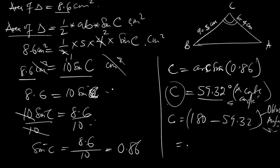This is the real value of C, not this one. This one is an acute angle. What we're looking for is the obtuse angle. So 180 minus 59.32 equals 120.68 degrees, roughly 120.7 degrees.